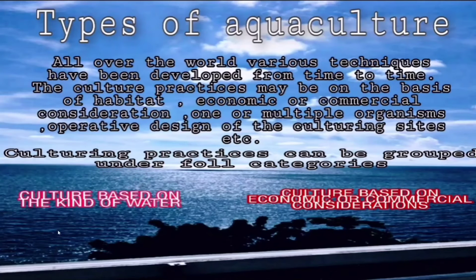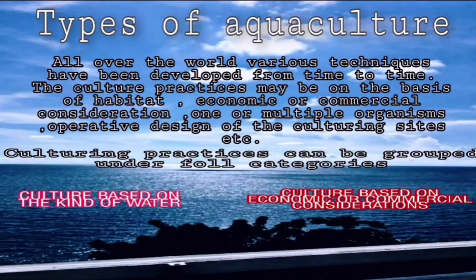Today we will be studying about different types of aquaculture. We have already completed our topic about the history and scope of aquaculture. Now we will study about different kinds of aquaculture, which can be traditional, extensive, intensive, and semi-intensive.